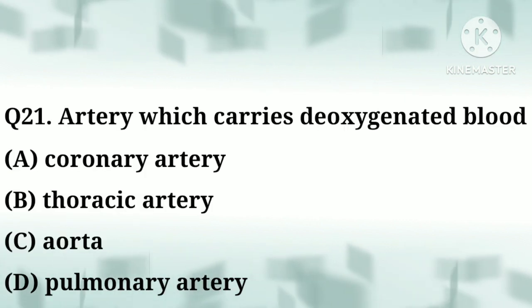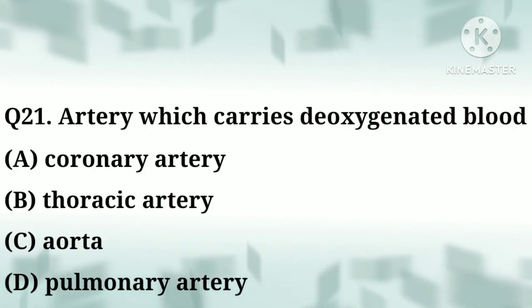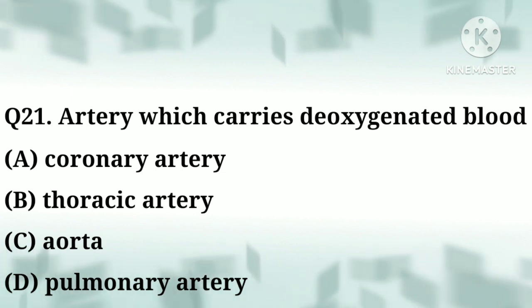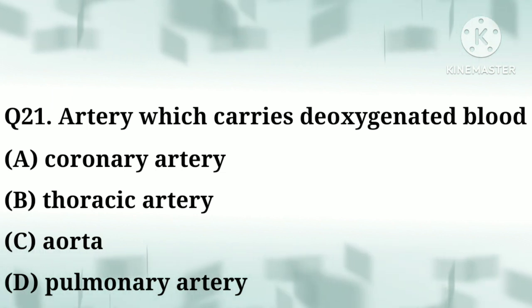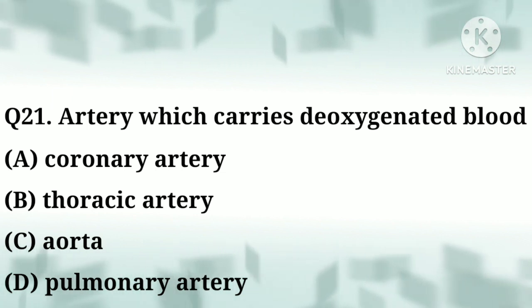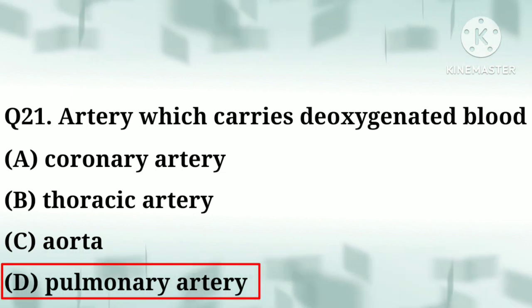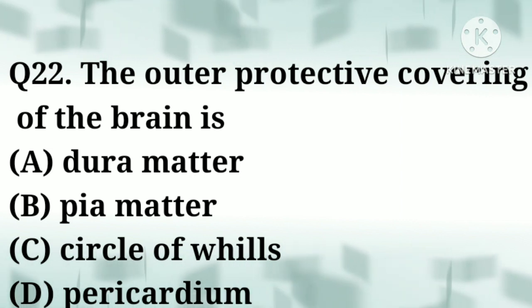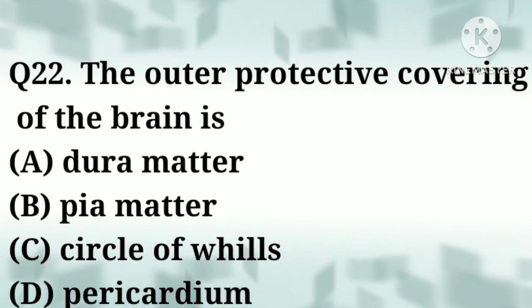Question number twenty-one: the artery which carries deoxygenated blood — option A: coronary artery, option B: thoracic artery, option C: aorta, option D: pulmonary artery. Correct answer: option D, pulmonary artery.